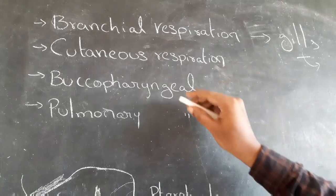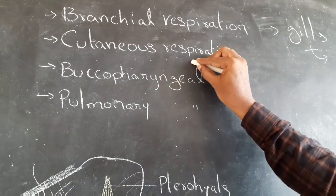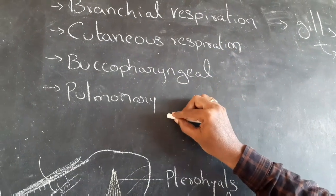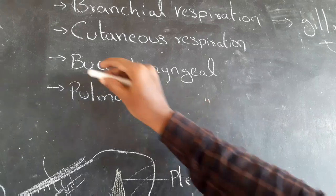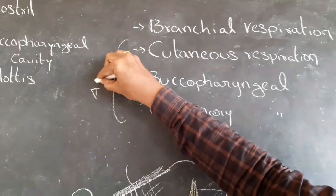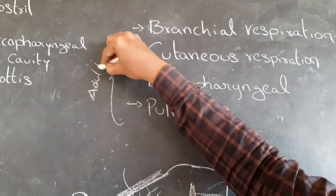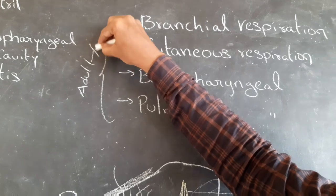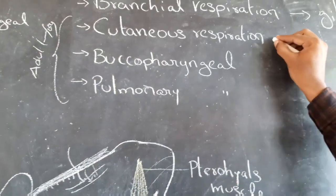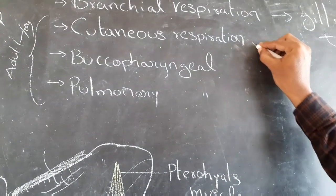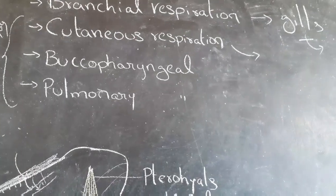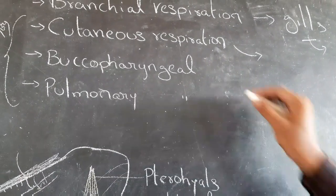Cutaneous respiration, buccopharyngeal respiration, and pulmonary respiration occur in adult frogs. Next, cutaneous respiration.